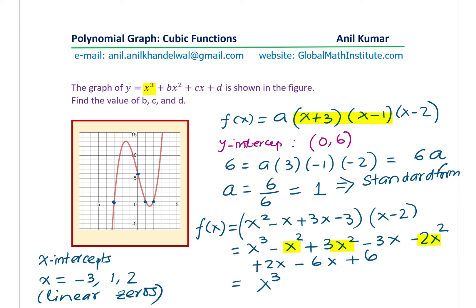So the x squared terms are in fact zero. As far as the x terms are concerned, we have minus 3x and plus 2x is minus x. So that gives us minus 7x. And the constant here is the product of 3, 1, and 2, which is 6.